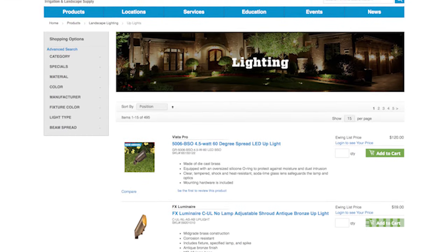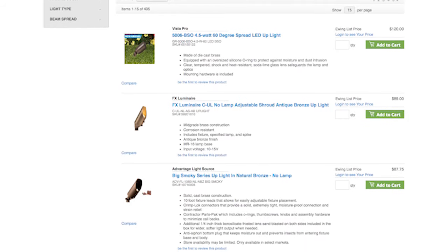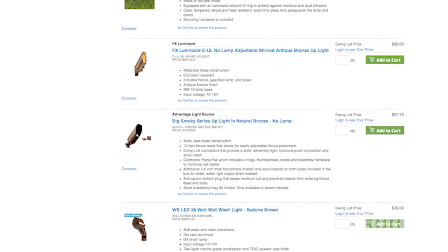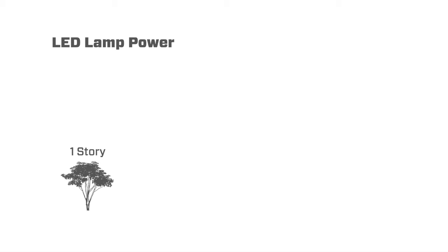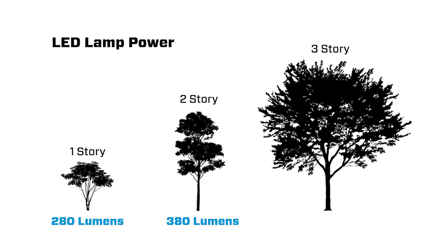Once you've collected all your data, you can then determine which fixtures, lamps, and accessories to use. Here are some general guidelines that should help you with your selection. For trees that are up to one story in height, you'll need LED fixtures that put out about 280 lumens. For trees between one and two stories high, 380 lumens of power is needed. For trees that are over three stories, fixtures up to 1,600 lumens are also available.